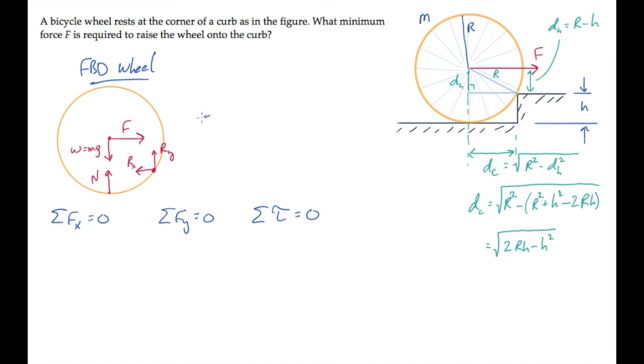The minimum force F required to raise the wheel onto the curb occurs when the wheel just begins to lift up, which means that the normal force disappears. So we can zero out the normal force.